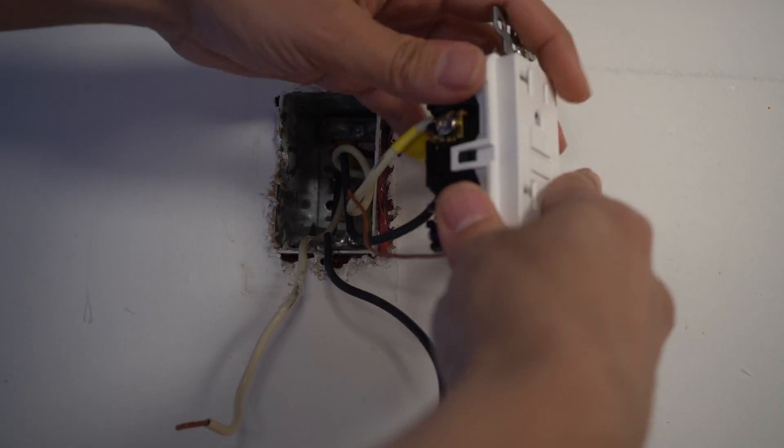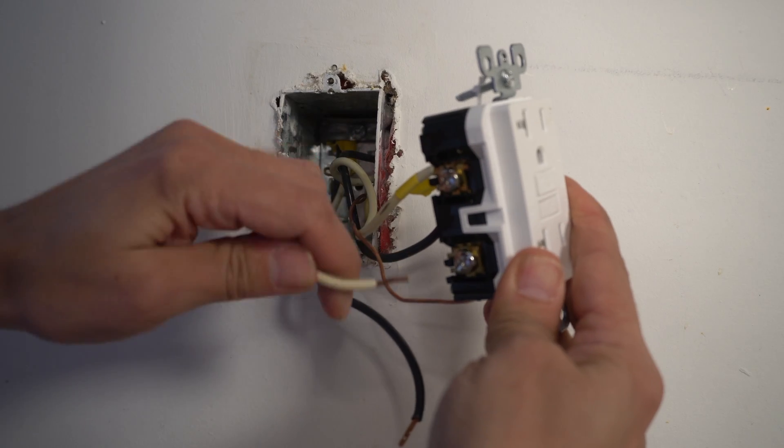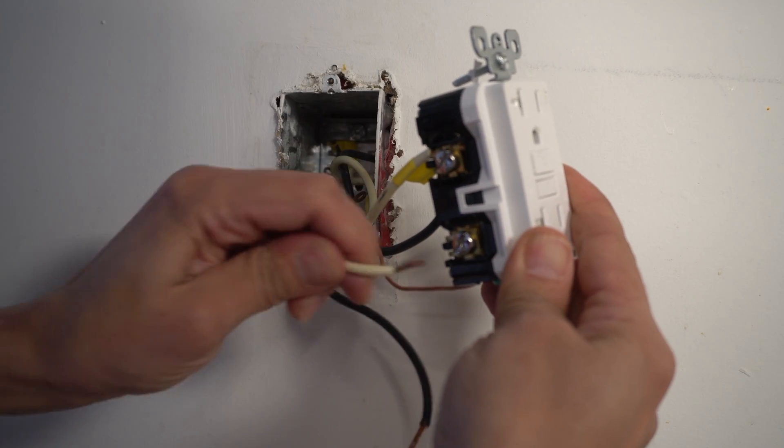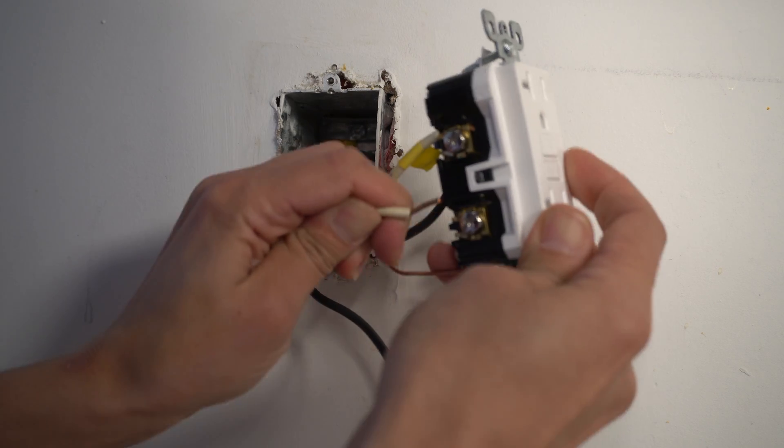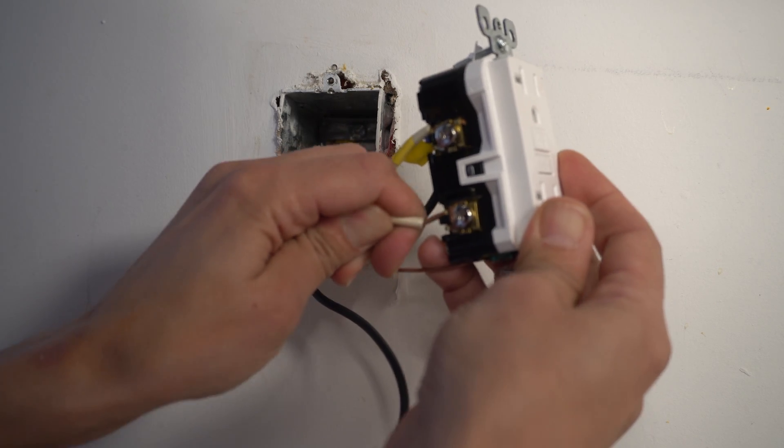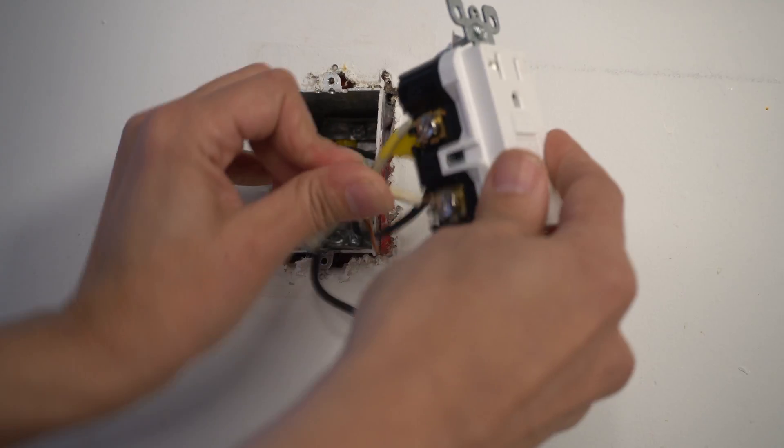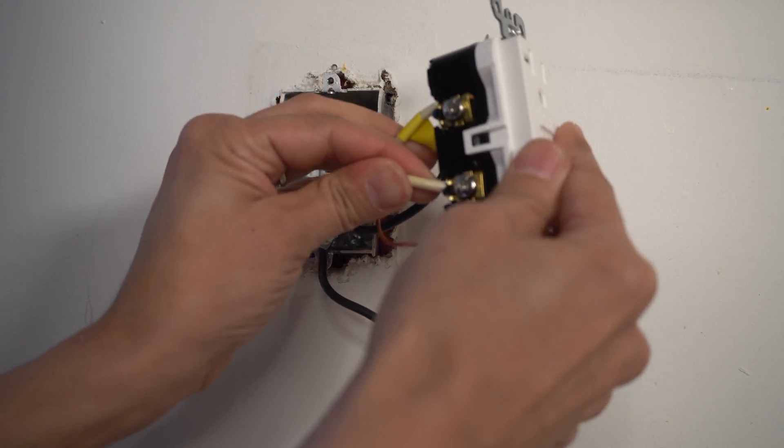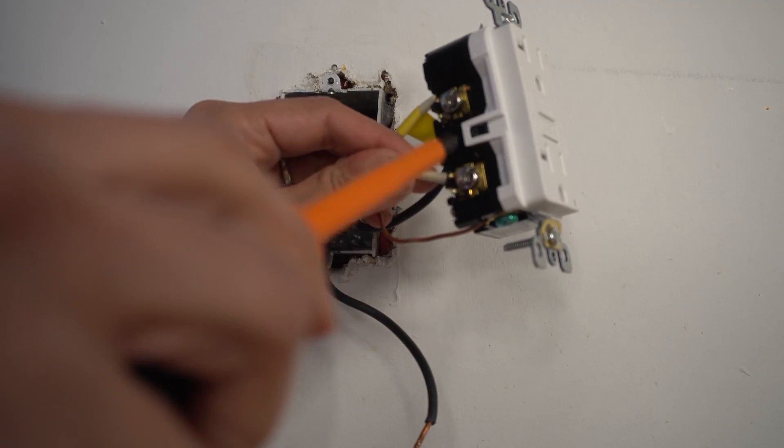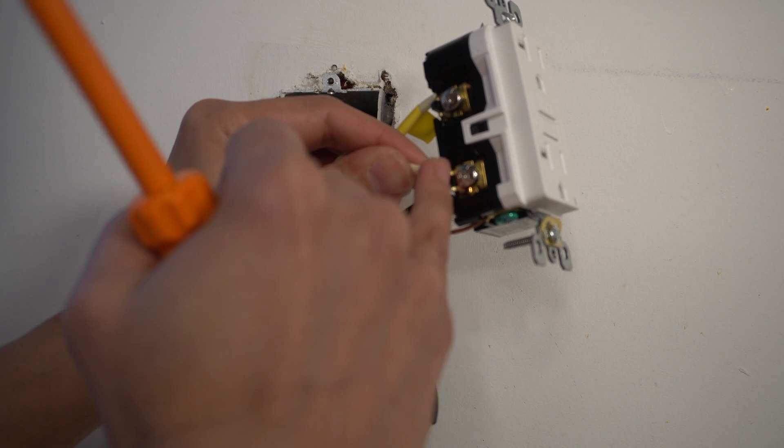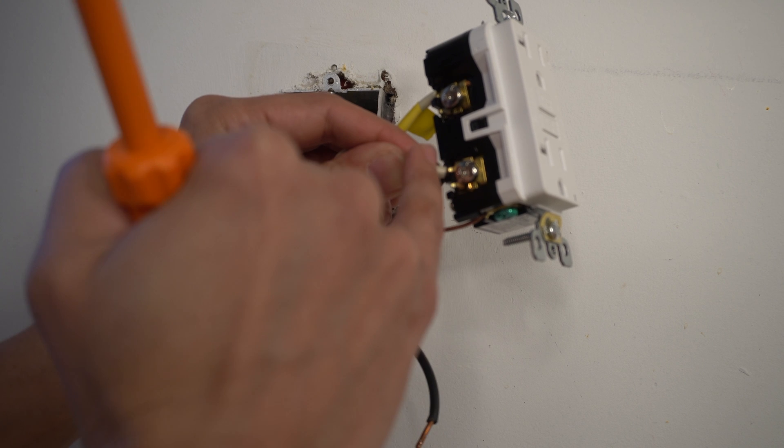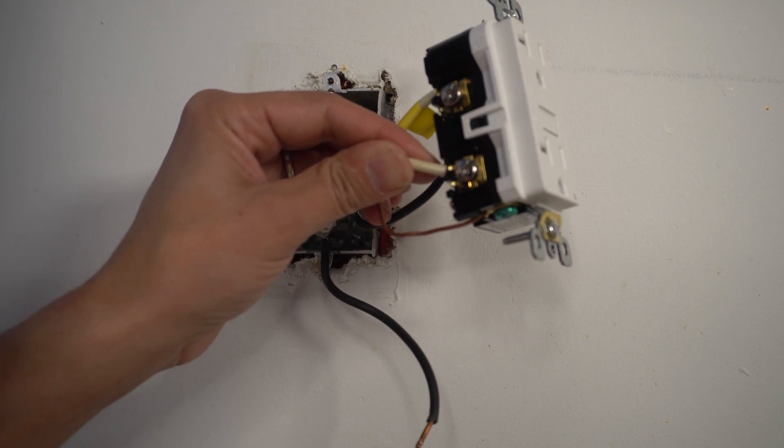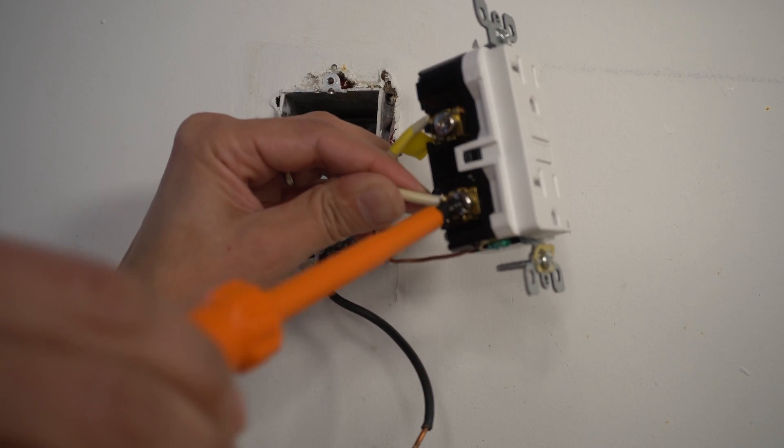So next up, we want to start with our neutral on the silver side here. And this bottom, again, is your load. So you want to insert that in behind the clamp, straighten that out, push it in. You got good coverage. You also want your insulation. You see this insulation? That's how it should look. You don't want to have exposed wires out of the backside because you could cause a short. Now I'm just going to tighten that up. Nice and firm.